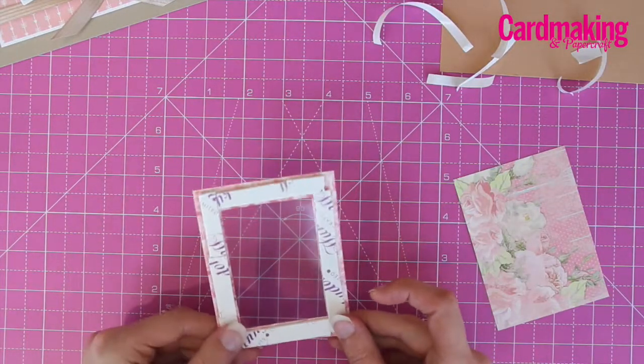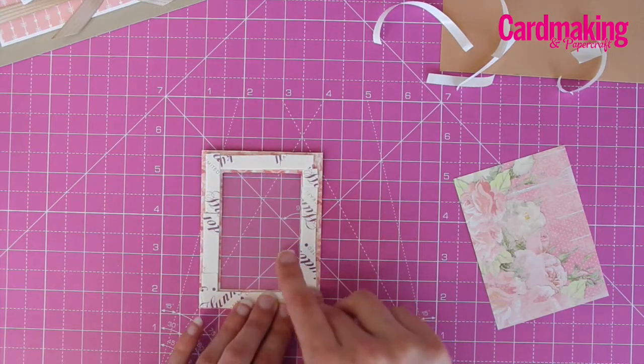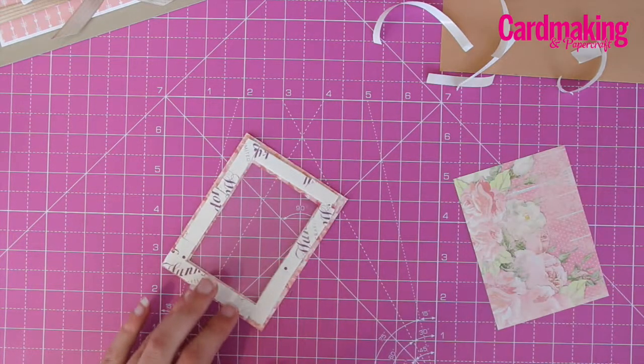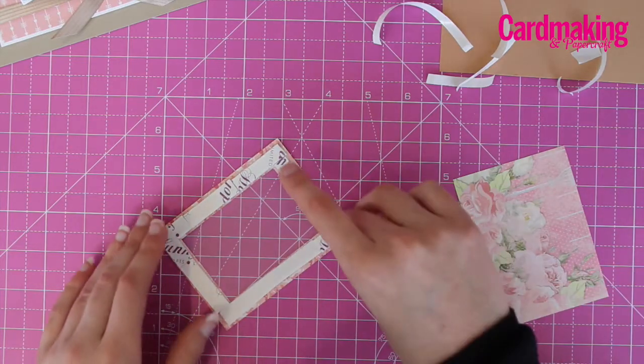Once you've gone around the whole of the frame, then remove the backings from the foam tape.